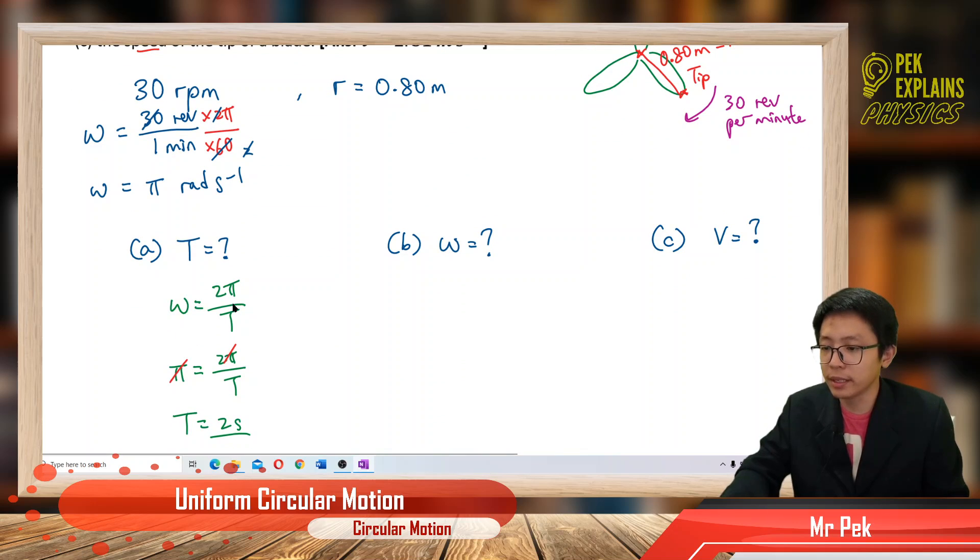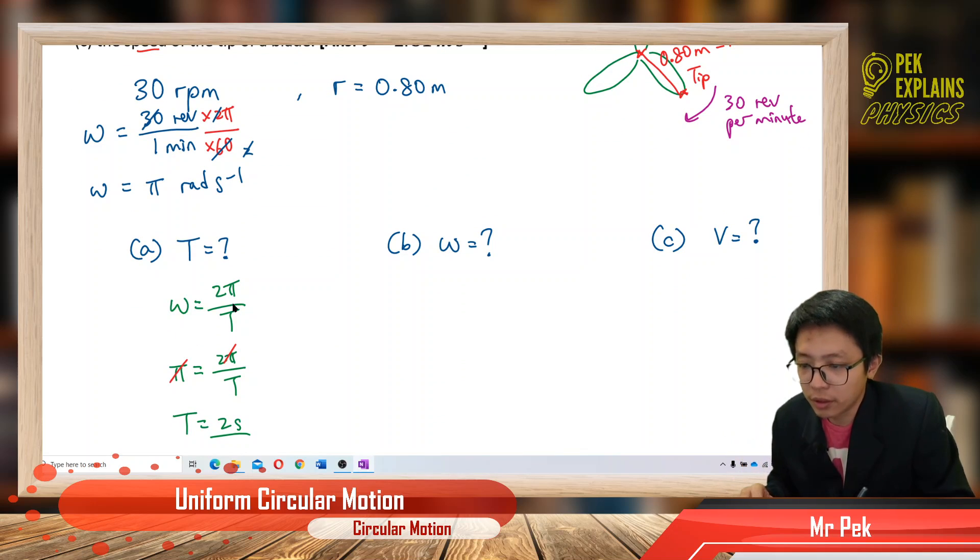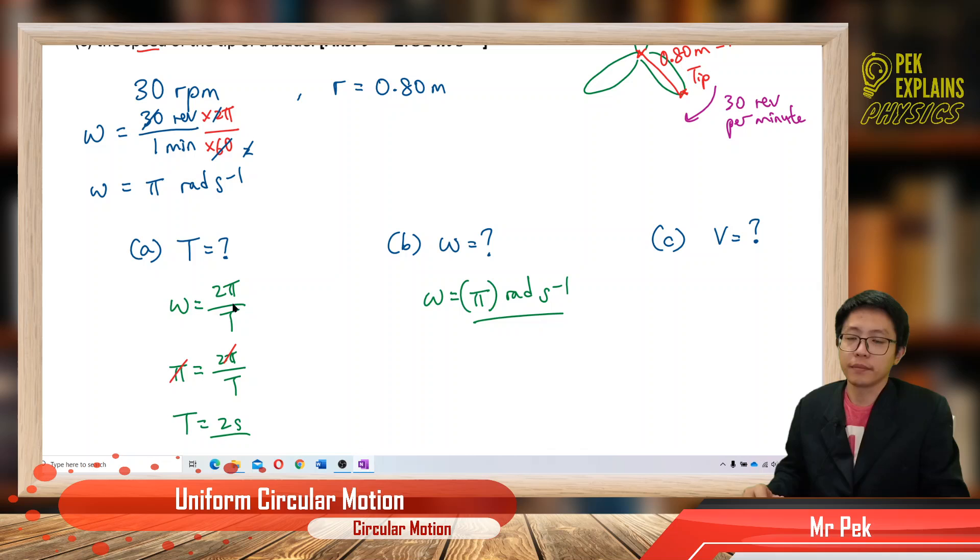Now what is omega? Oh, omega we got already. Omega is π radian per second.